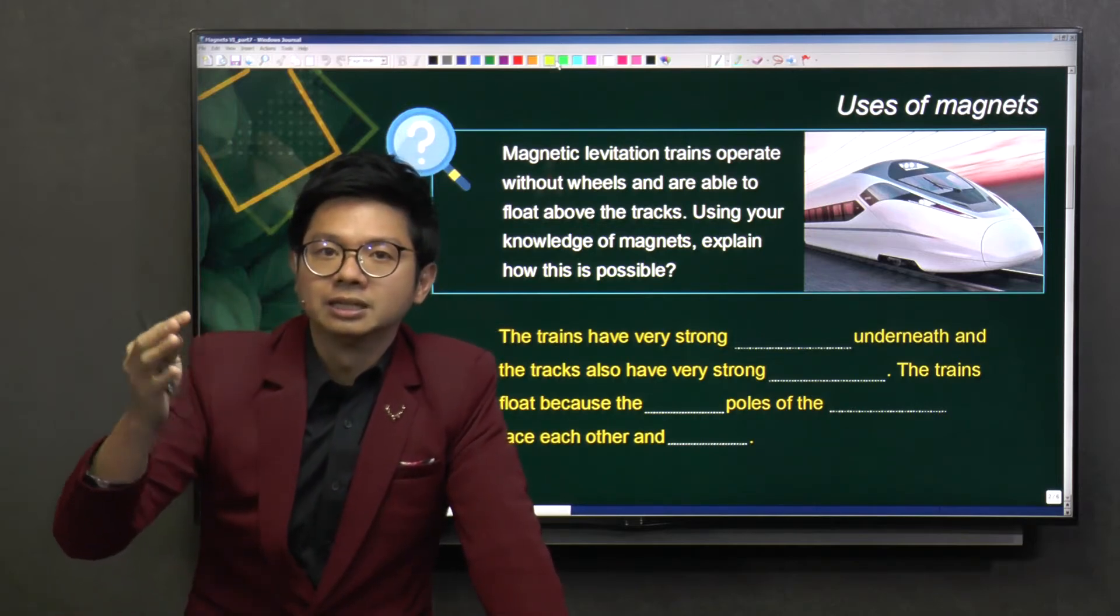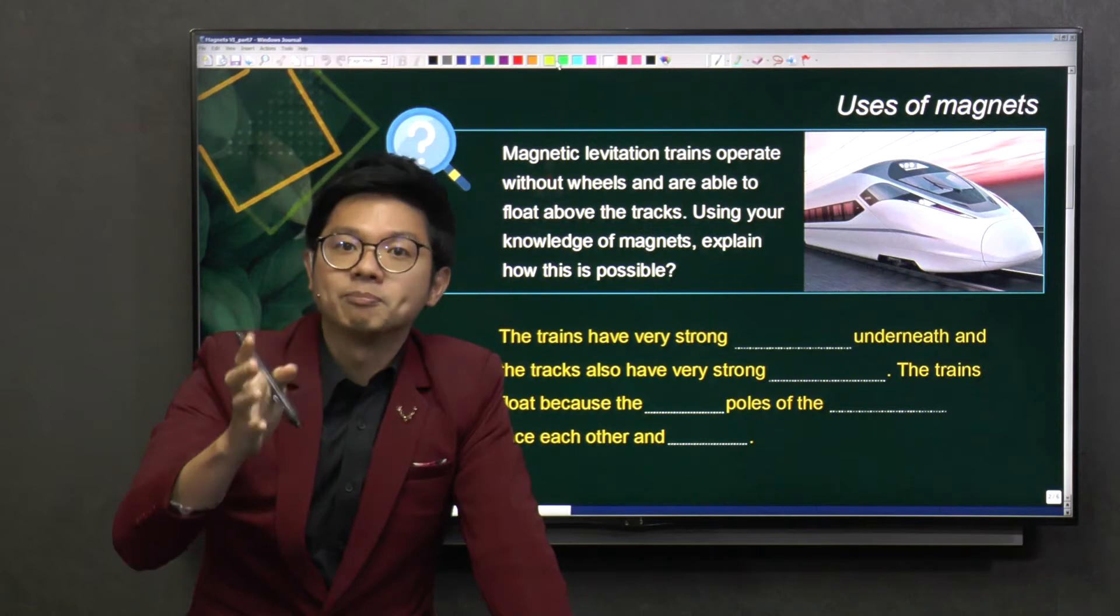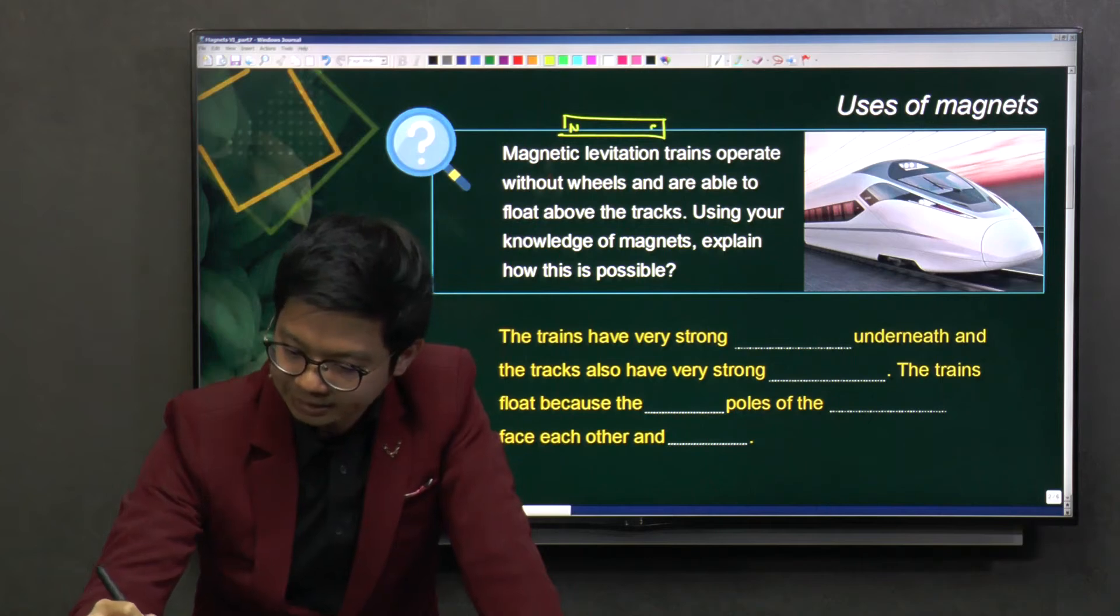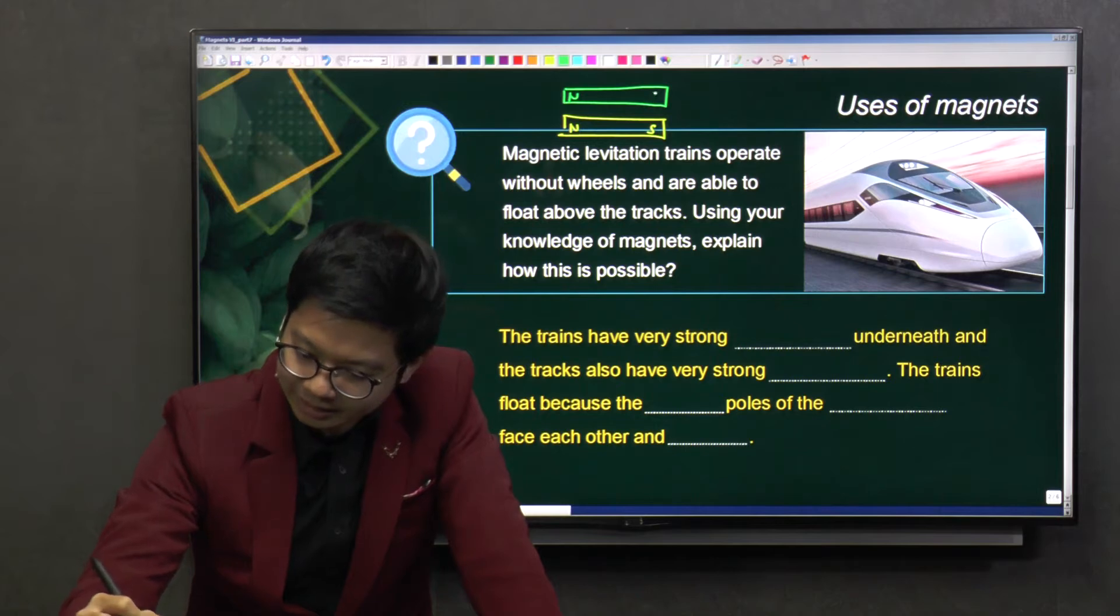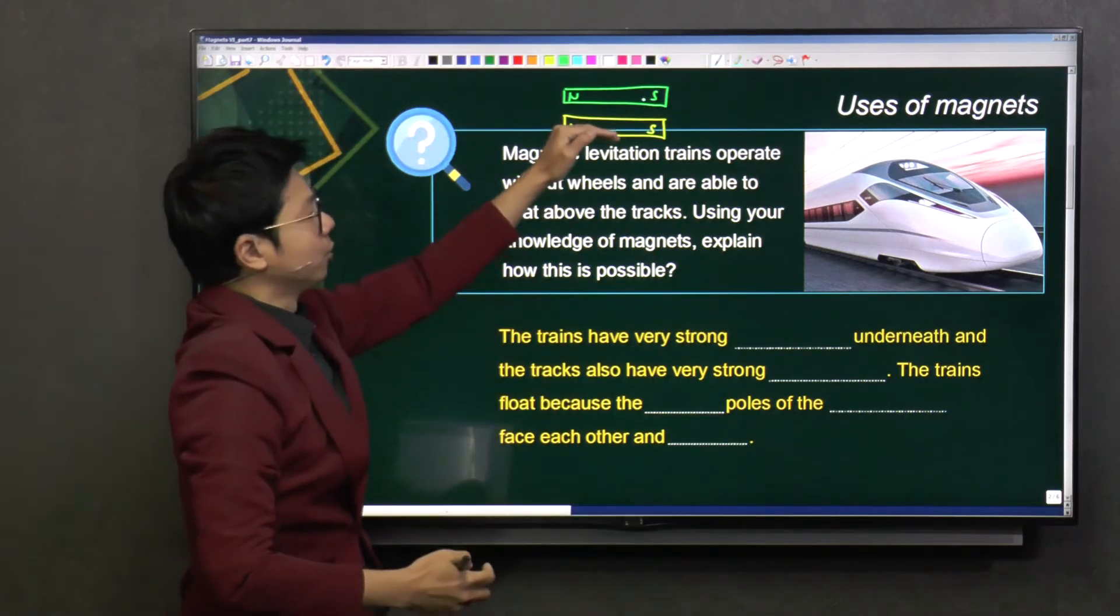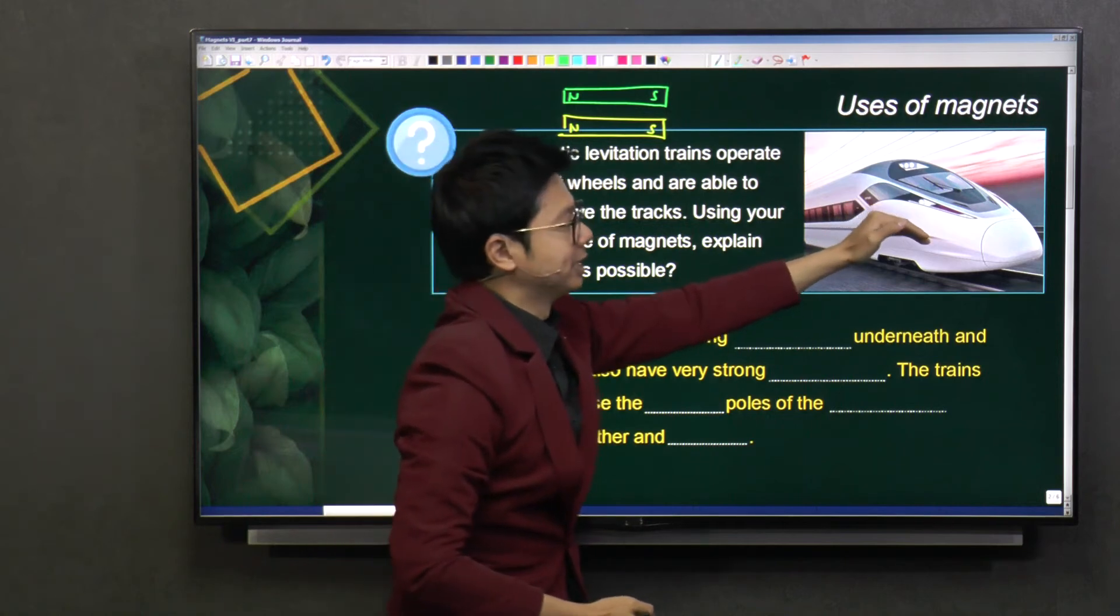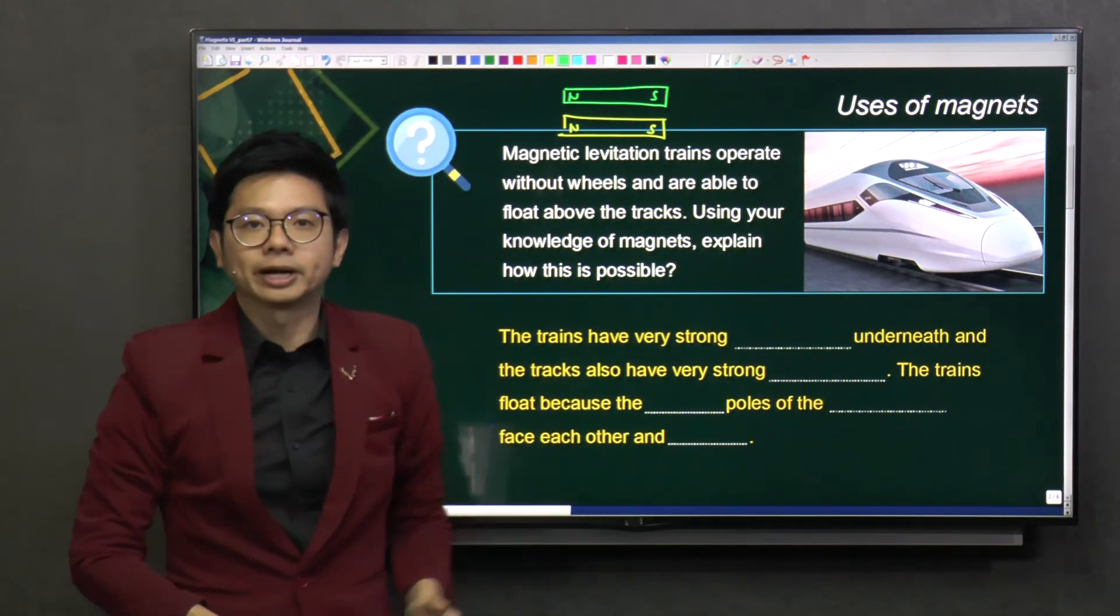You can use the like pole theory of a magnet to explain this. For example, if I have a magnet, this is N, this is S, and I put another magnet on top, this is N, this is S, so it will repel each other. So that's how the train is being levitated above the track.